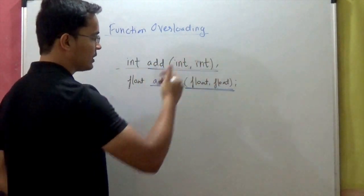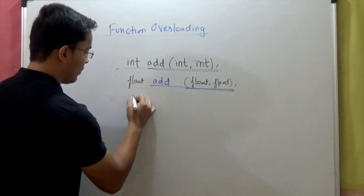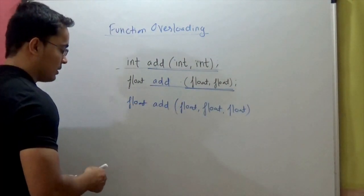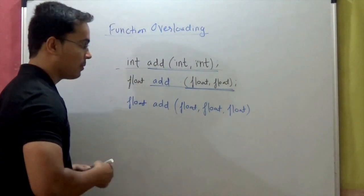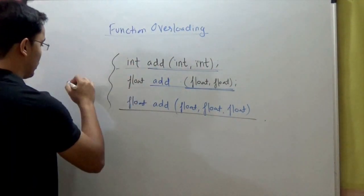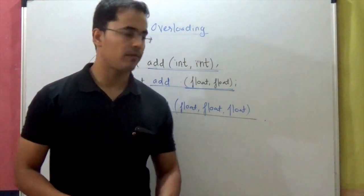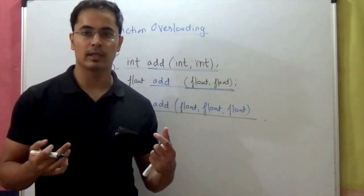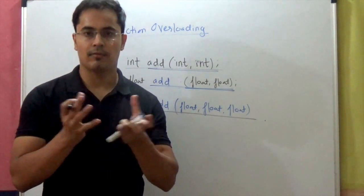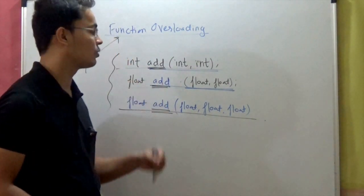So I have one function int add which adds two integers, one function which adds two floats, and one function which adds three floats. These three functions have the same name but different signatures. This phenomenon is called function overloading. This is done when your functions are conceptually doing the same task — all three functions are basically adding some values, so we would like to have the same name for them.